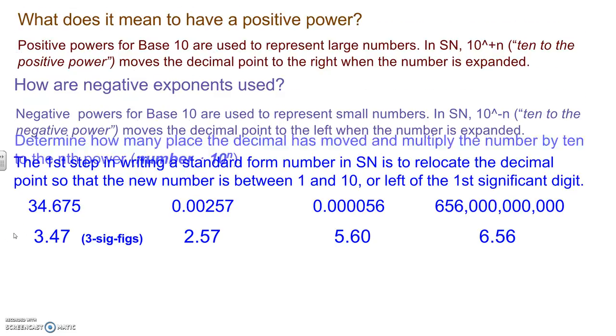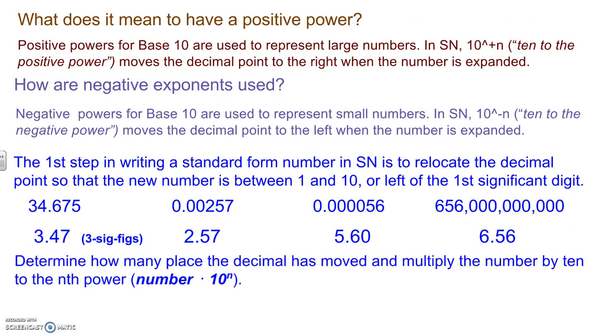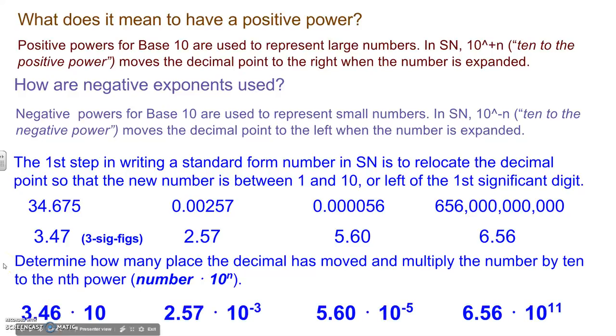After that, we want to decide, well, how many places did I move the decimal and would I have to make the number larger or smaller? So in our first example, it's going to make it larger by moving it one place. It's going to make it smaller by three places, smaller by five places, and larger by three, six, nine, and eleven places. So that helps you to determine what your powers mean.